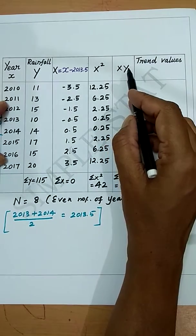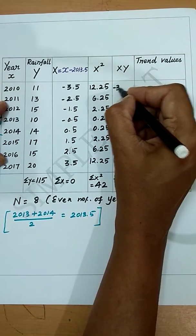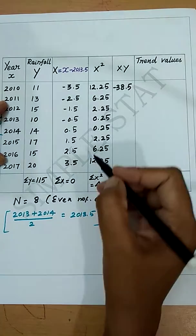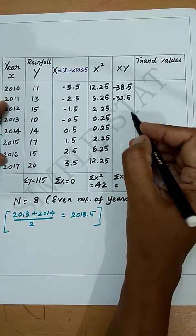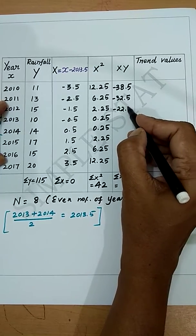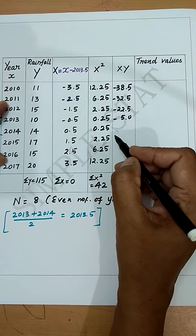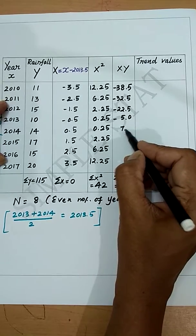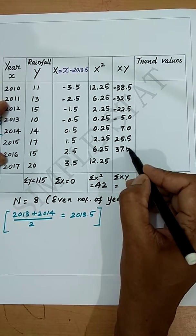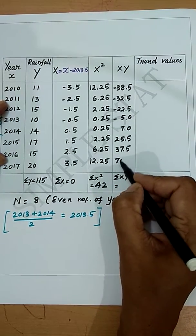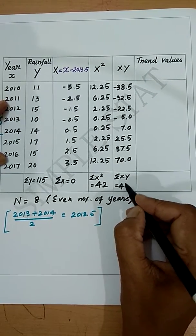Now finding XY: (−3.5)(11) = −38.5, then −32.5, −22.5, −5.0, 7.0, 25.5, 37.5, and finally 70. Adding all these values, we get summation XY = 41.5.